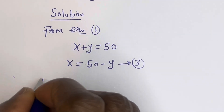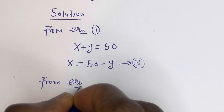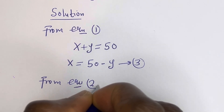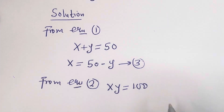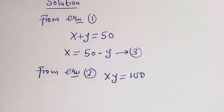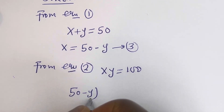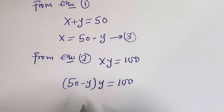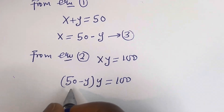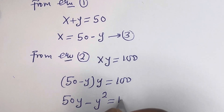From equation 2: x times y is equal to 100. Now let's substitute for x. We have (50 minus y) times y is equal to 100. Then 50 times y minus y times y, that is y squared, is equal to 100.